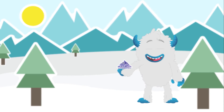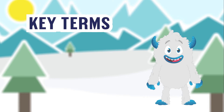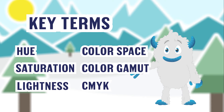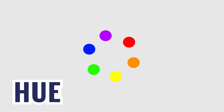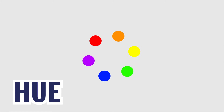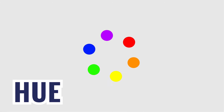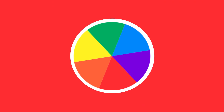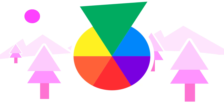Next, Marty is going to define a few key terms that help us describe color. By the end of this video you will know what these six terms mean. Hue is the purest form of color without any other tints or shades added to it. Hue can also be a color's name, such as red, blue, or green.